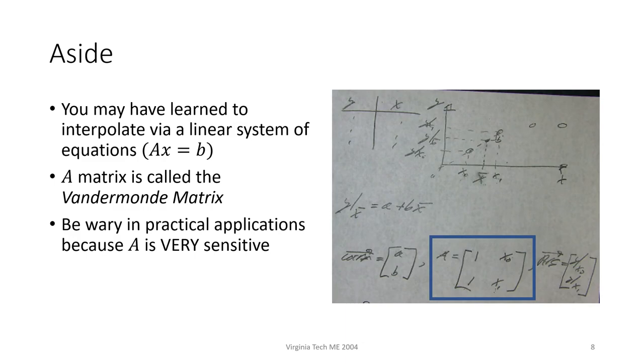And now I'd like to take a brief aside. You might have learned how to interpolate using a linear system of equations. To get technical, the A matrix in this setup is specifically called a Vandermond matrix. There's really nothing wrong with this approach for the purposes of ME 2004, but this method may not be too reliable in practical applications since the Vandermond matrix happens to be incredibly sensitive to small changes.